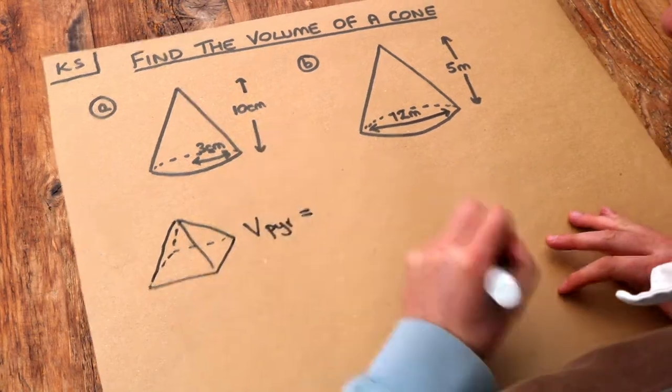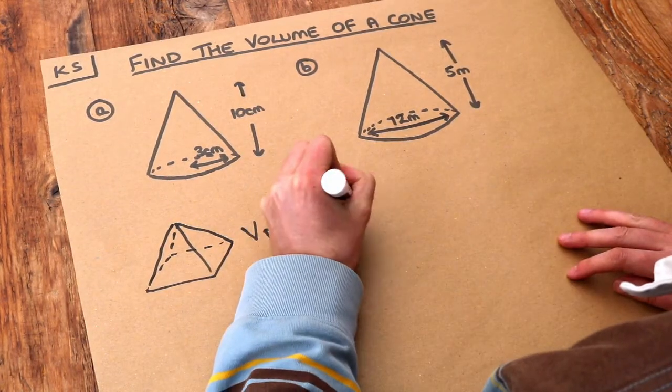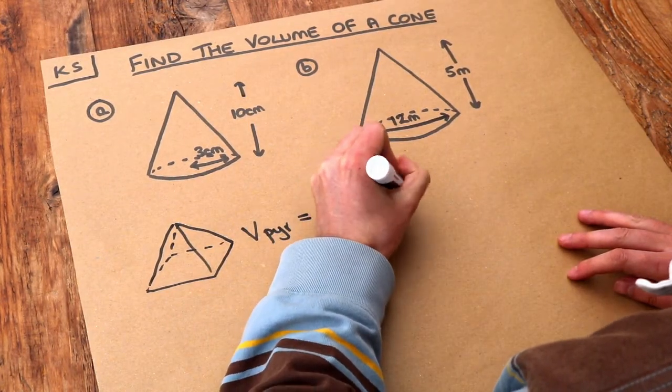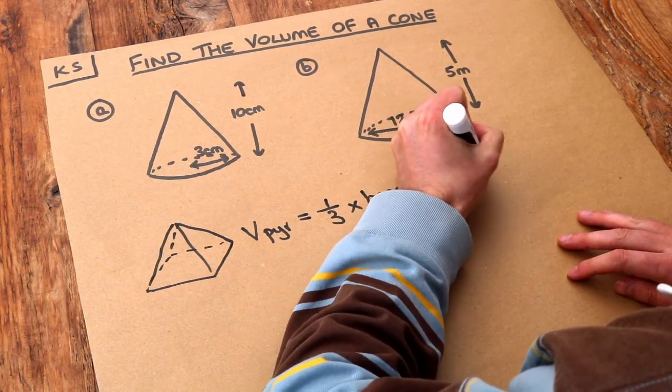general was equal to a third times the base area times the height.